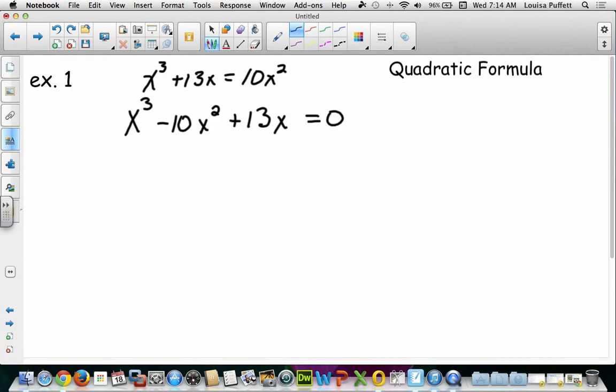Now, as I'm looking at this, I have a polynomial with three terms. And I notice that all three terms have an x in common. So the first thing that we want to do is factor out the x. So we'll have x times the quantity of x squared minus 10x plus 13. And this equals zero. Notice that I still write equal zero each time. I can't leave that part off.